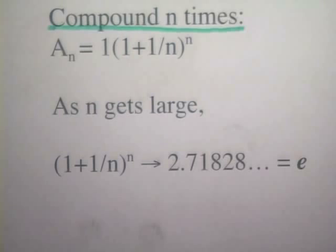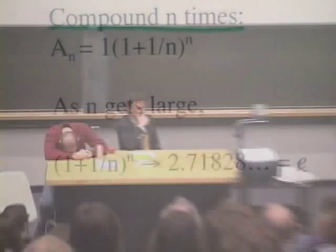that number is approaching this magical number e. This is where e is coming from. This is the actual definition of e. It's the limit of this quantity as n gets large. There's the definition of e. It comes from the loan sharks. That's where it comes from.